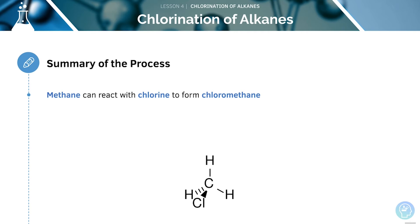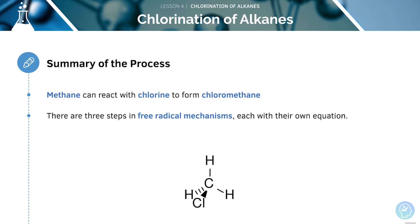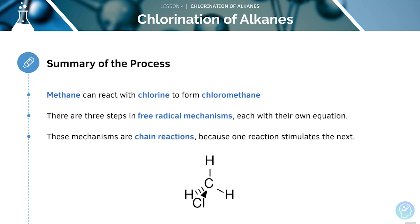As we saw earlier, methane can react with chlorine to form chloromethane. We'll quickly recap the mechanism now. There are three steps in free radical mechanisms, each with their own equation. The mechanisms are known as chain reactions, because one reaction always stimulates the next.